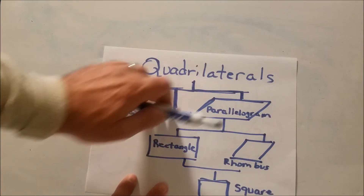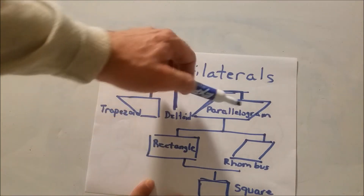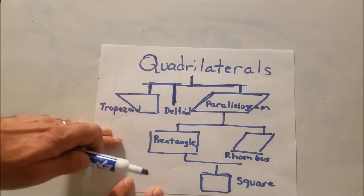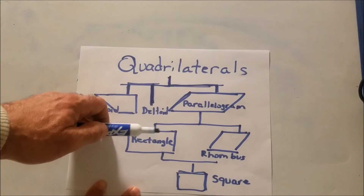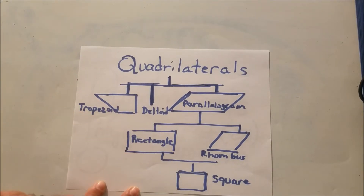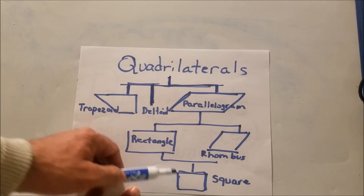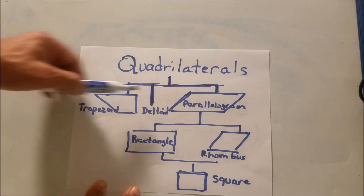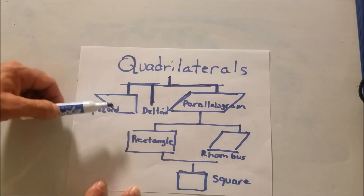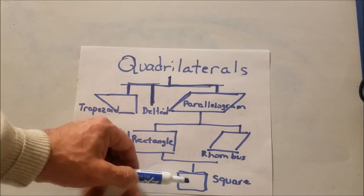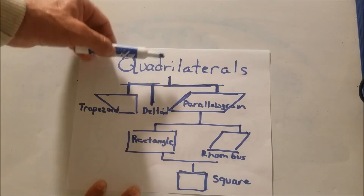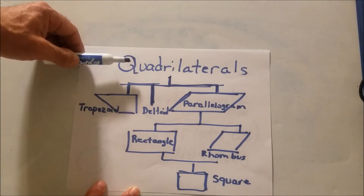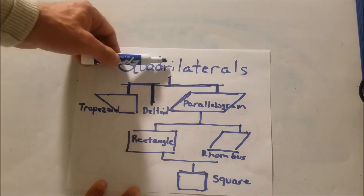Every rhombus is a parallelogram, but not every parallelogram is a rhombus. Every square is a rectangle, but not every rectangle is a square. Trapezoids are not parallelograms — they're on a different branch — but a trapezoid is a quadrilateral. Every rhombus is a quadrilateral, but not every quadrilateral is a rhombus.